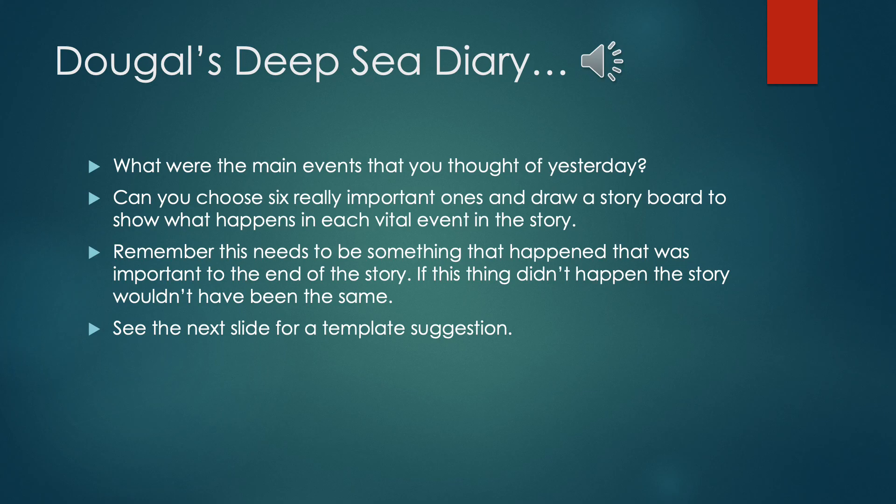For today's lesson, you're going to be thinking about those main events that you made a list of yesterday. Could you choose six really important events and draw a storyboard to show what happens in each vital event in the story? Please remember that these events need to be something that really happened and that influenced the whole story — so if that thing didn't happen, would the story have still ended the same, or would it have still been as exciting or fun?